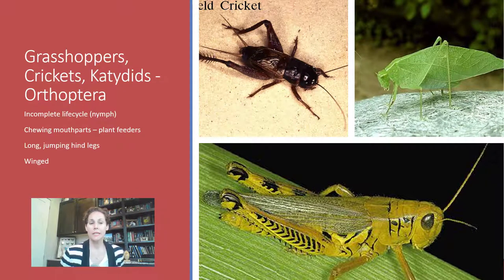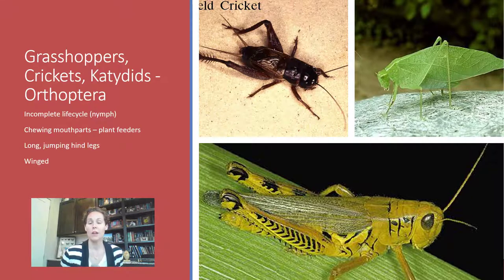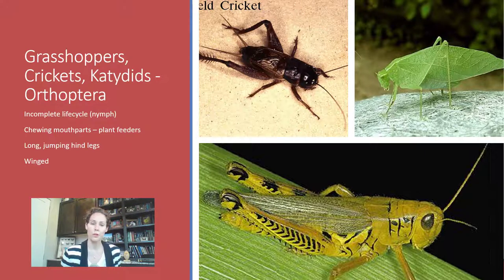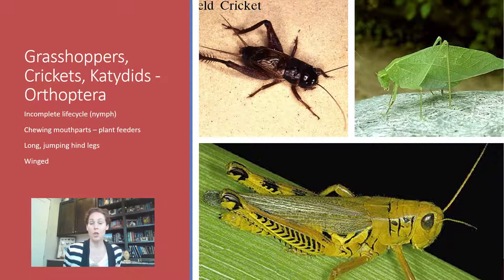Grasshoppers, crickets, and katydids are all in the order Orthoptera. I remember this because 'orthoptera' has a 'hop' in it — these are all the hoppers. They all have modified hind legs with big muscles meant for jumping. They have an incomplete life cycle; the immature is called a nymph. They have chewing mouthparts and are primarily plant feeders, though some species are predatory or even cannibalistic. They are also winged and fairly cosmopolitan, found on pretty much every continent.